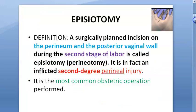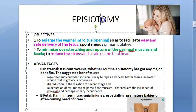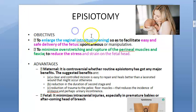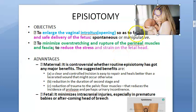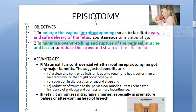The basic intention of doing an episiotomy is to enlarge the vaginal introitus — the opening of the vagina — so that there can be an easy and safe delivery of the fetus. You also want to minimize the overstretching and rupture of the perineal muscles and fascia.